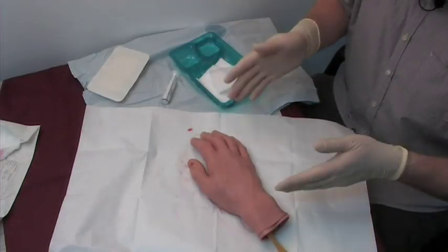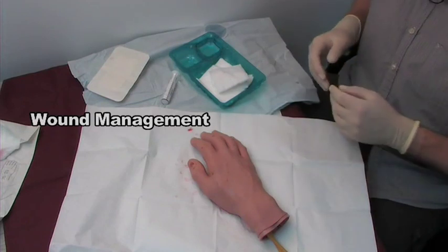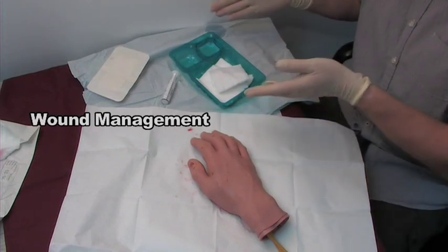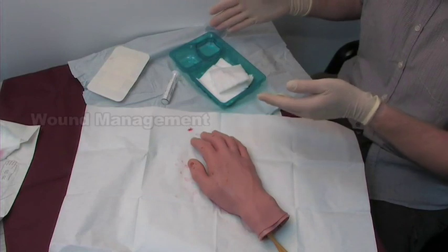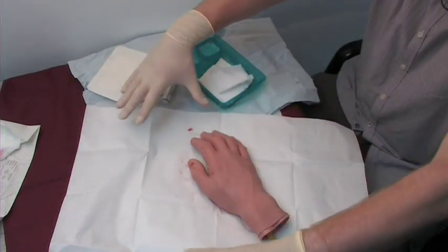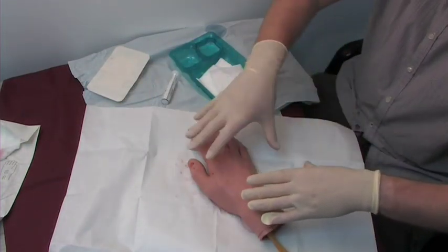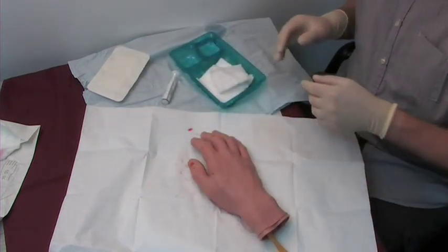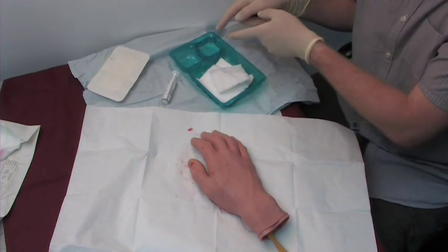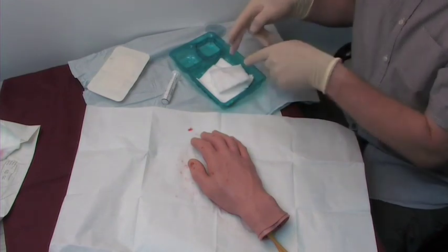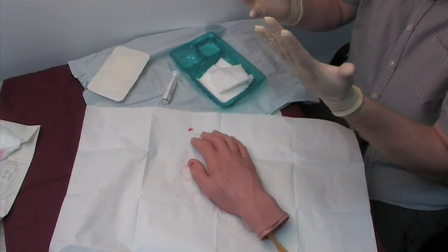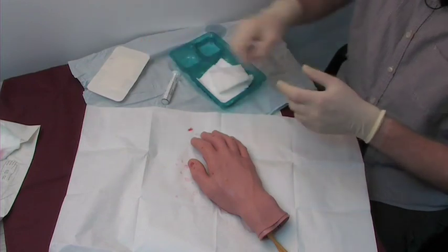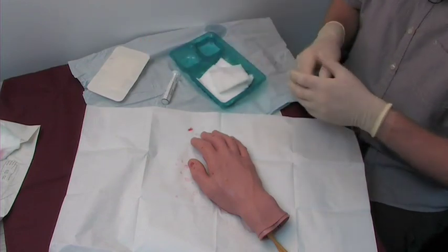We're just going to demonstrate wound management. We have our dressing pack which has been opened up using the sterile techniques which was demonstrated before. We get a drape, patient's hand is placed over it. This is my sterile field. I've got my cleaning solution which is normal saline, my gauze swabs from the dressing pack. I'm wearing my sterile gloves and I have my dressing to be applied afterwards.